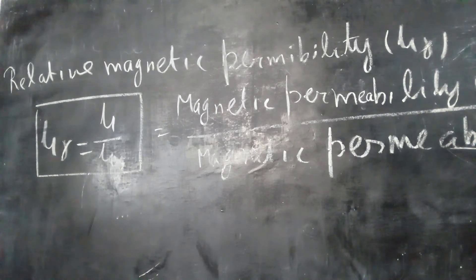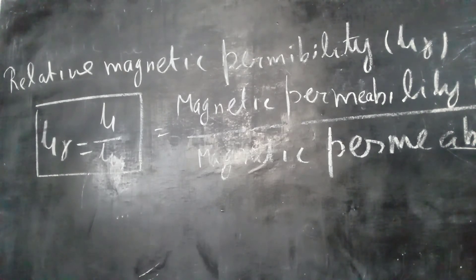So, relative permeability has no unit — it is dimensionless.